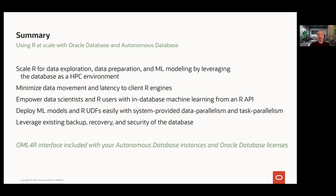In summary, we've seen how you can use R for accessing and manipulating database data from a variety of connectivity packages, with benefits from using the database as a high-performance computing engine. With OML for R, we saw how we can further leverage the database as an HPC environment for data exploration, data preparation, and machine learning modeling. By empowering data scientists and R users with in-database machine learning algorithms from an R API, we gain scalability and performance in part by eliminating data movement. We can also easily deploy machine learning models and invoke R UDFs with system-provided data and task parallelism, and benefit from RDBMS backup, recovery, and security. The OML for R interface is included with Autonomous Database instances and Oracle Database licenses.